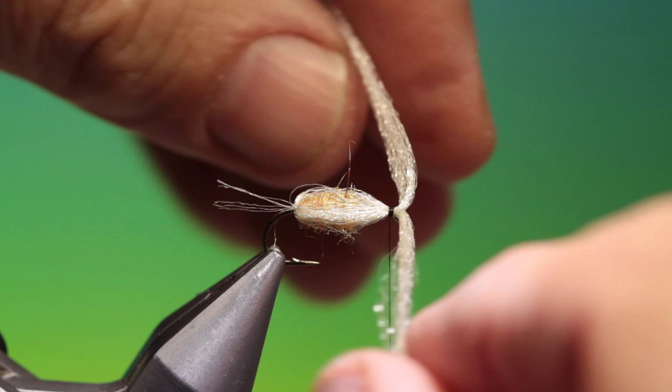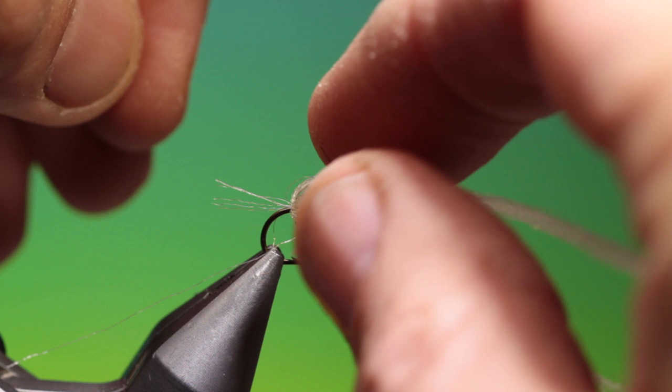Then what we do is three or four loose turns, and we take hold of the Antron and pull it back to inflate the bubble. We can just position it if need be - there we are, that's perfect. I can tie that off nice and tight.